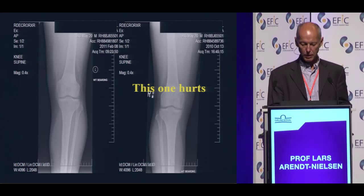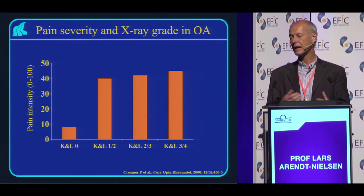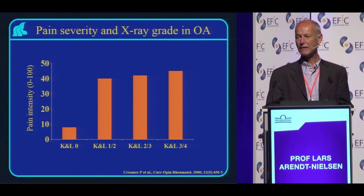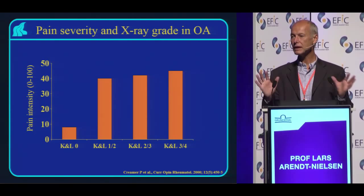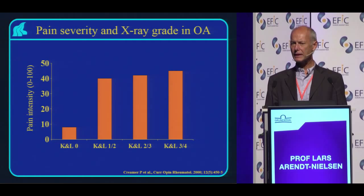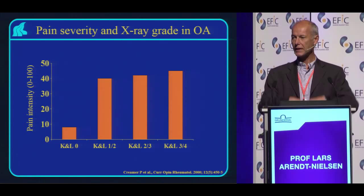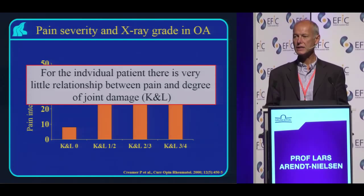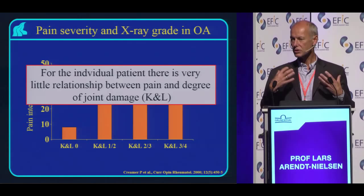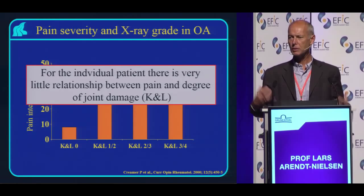If we look at the population, there's very little correlation. The KL here is the Kellgren-Lawrence score — a grading of how much joint damage you see. A high number of three or four means massive joint degeneration; zero, one, or two means minimal damage. Again, you can see there's very little association between the degree of damage and the actual pain. So something else may actually contribute to that overall perception of chronic pain in osteoarthritis.